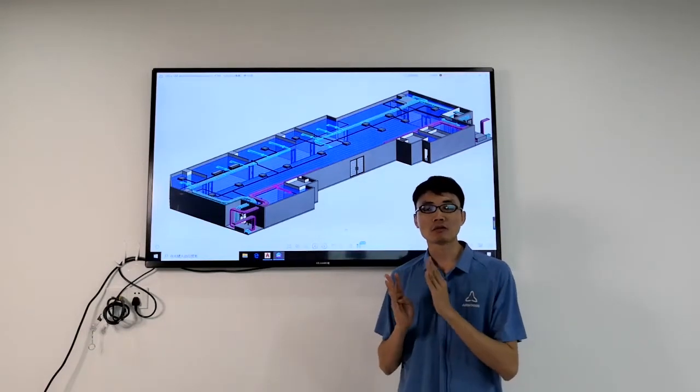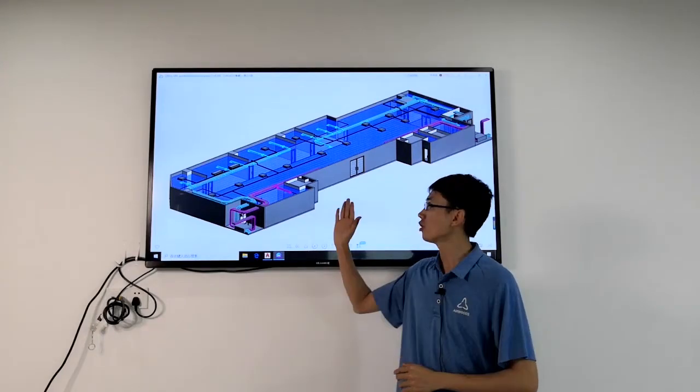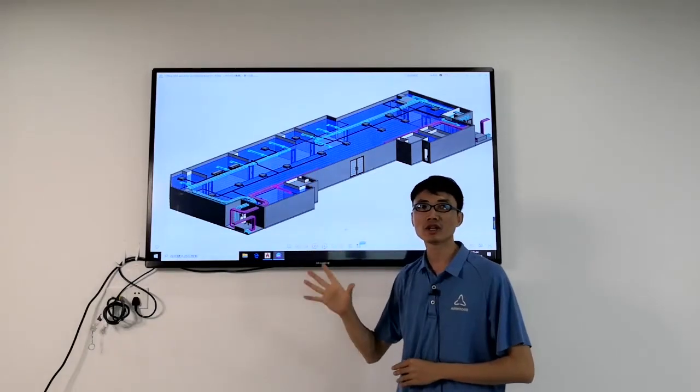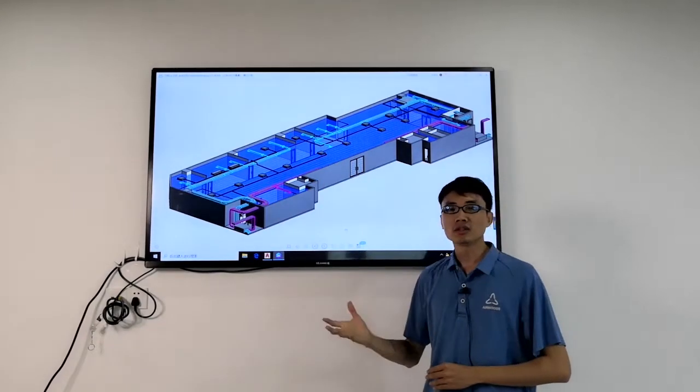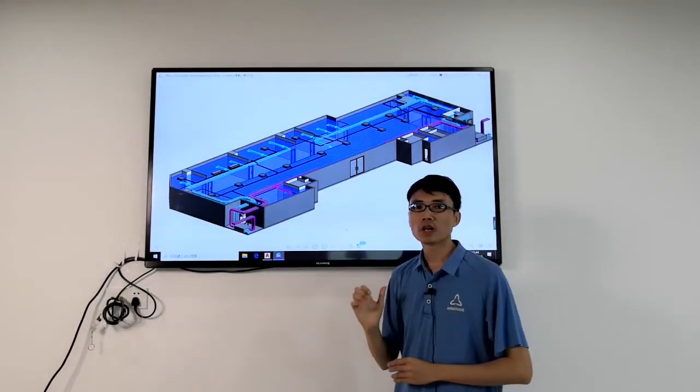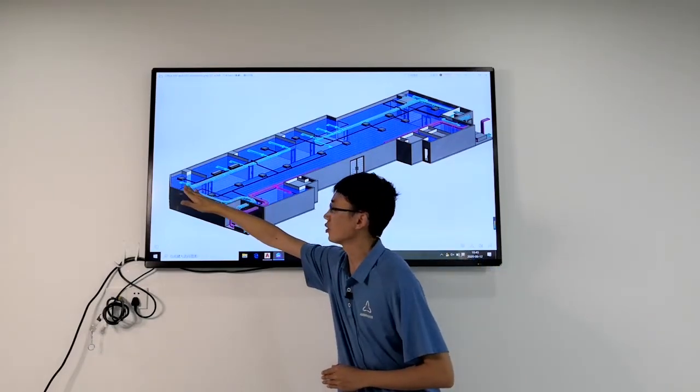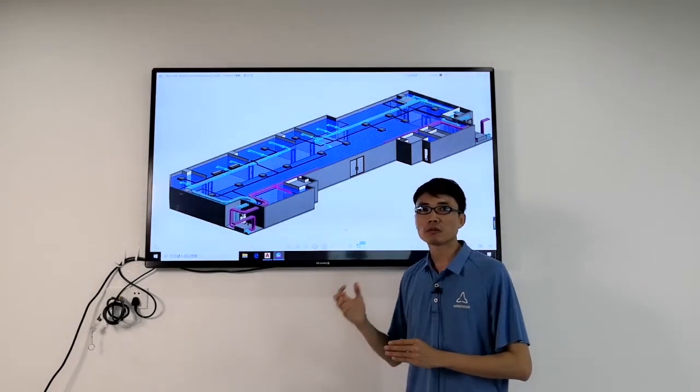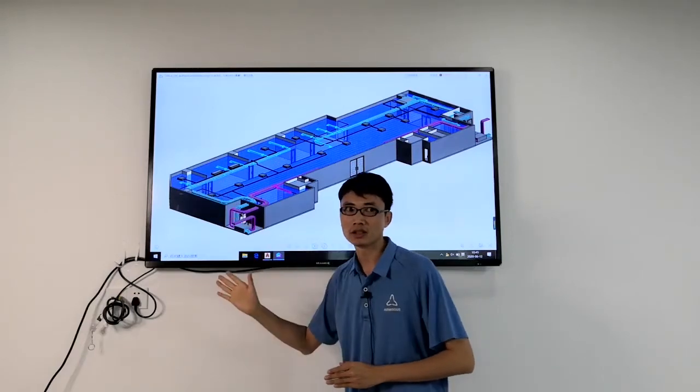The second point is the variable speed fan control. In each of the room, we would set a fresh air damper here. The ERV will regulate its fan speed according to the feedback signal from the damper, so the fan's power can be reduced accordingly when the room is not occupied.